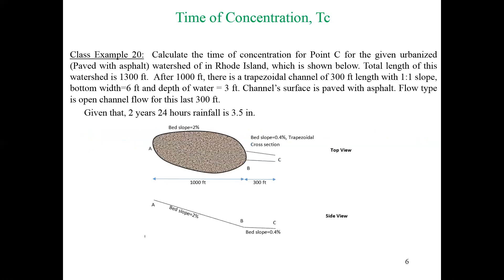Today we will do class example 20, which you can download from Canvas. I uploaded an empty class example 20 there and you can work on that. Let's read the question: calculate the time of concentration for point C for the given urbanized watershed. The total length of the watershed is 1300 feet. After 1000 feet there is a trapezoidal channel of 300 feet length with 1:1 slope, bottom width of 6 feet, and depth of water 3 feet.